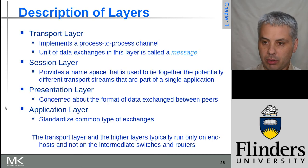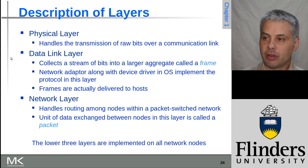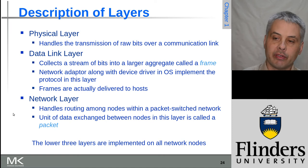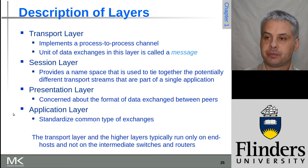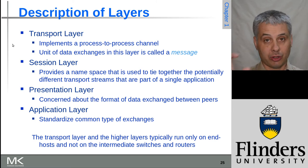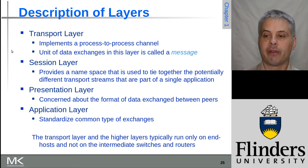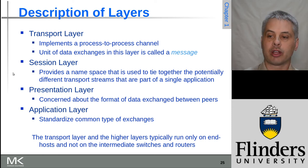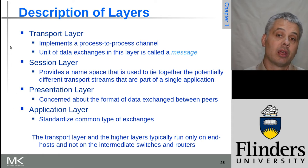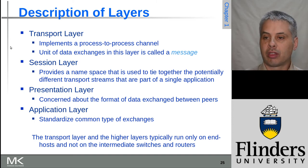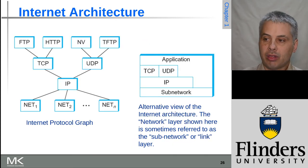The names of data units change as you move up the layers. At the data link layer it becomes a frame; at the network layer we have packets being switched across the network; and at the transport layer and above it becomes a message between two applications. Those terminologies apply in other systems as well, including the internet. Transport and higher layers only operate on end nodes running applications, rather than on intermediate network nodes like switches or routers.